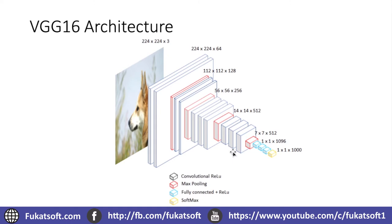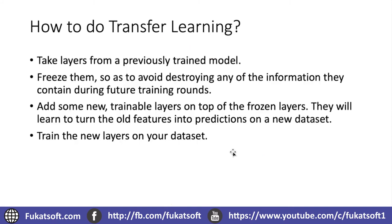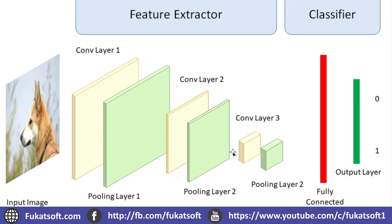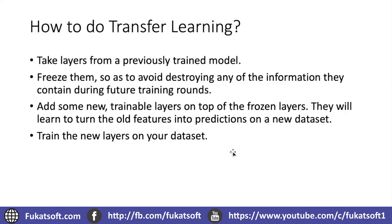In a CNN we have two stages. First, we have all the convolutional layers and pooling layers — let's call this the feature extractor. Then at the end we have some fully connected layers and an output layer — the classifier. What we do here is remove the last layer of VGG16, which outputs probabilities for 1000 classes, and replace it with a layer that outputs probabilities for 10 classes, since we want to classify 10 labels.